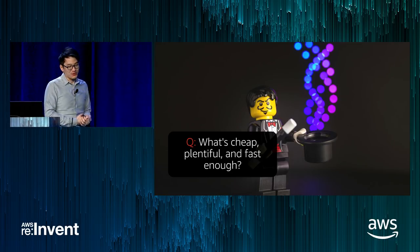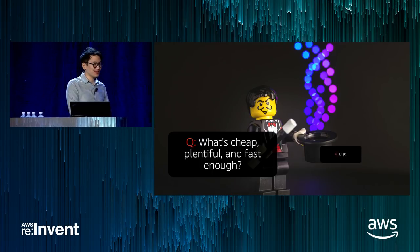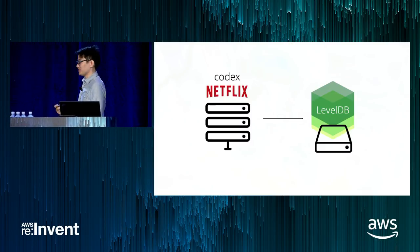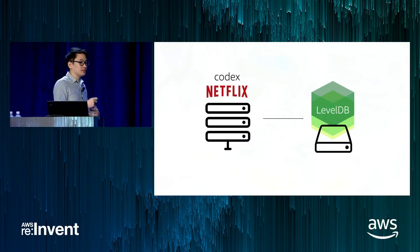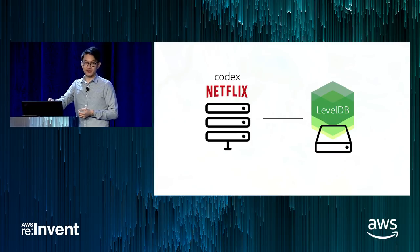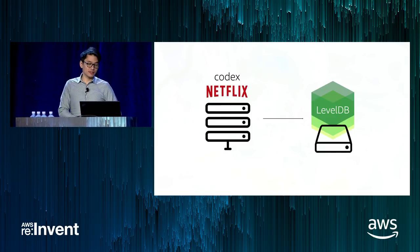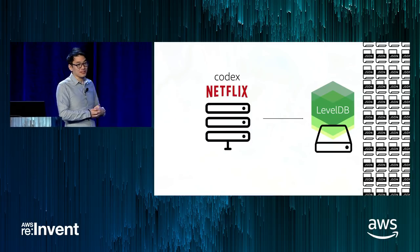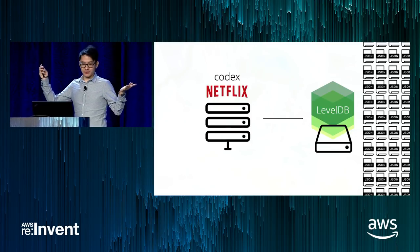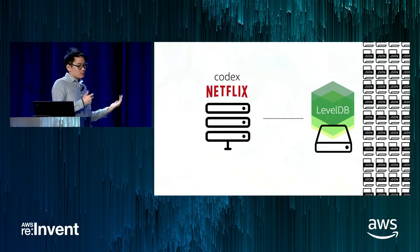We needed something cheap, plentiful, and fast enough. We actually had a ton of disks we weren't using — why not use that as a secondary cache? We pulled in LevelDB, a file system-backed database. We could store things in LevelDB, and as it exceeded its own in-memory cache, it would write stuff out to disk. Disk space is a lot cheaper than memory, meaning we could effectively store as many artifacts as we had disk space. We were no longer limited by instance types in terms of memory.